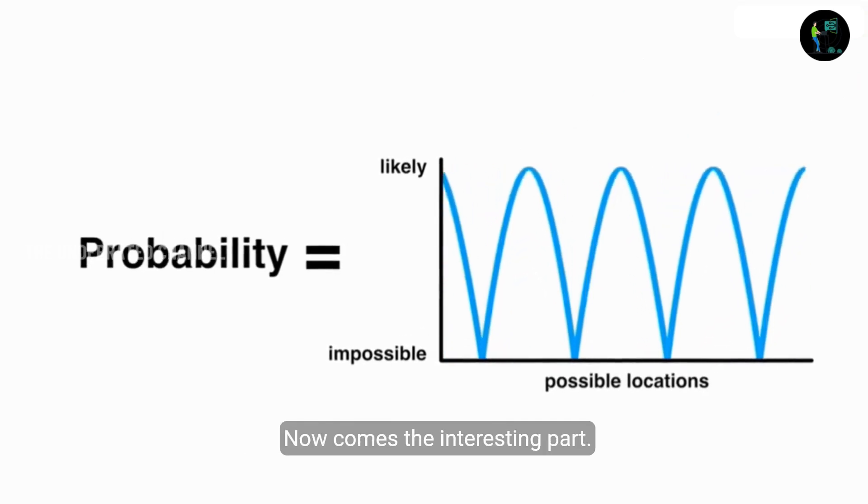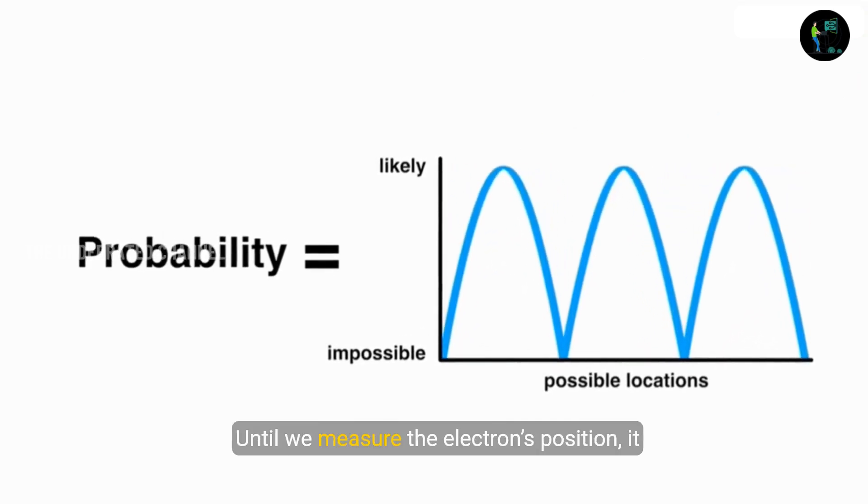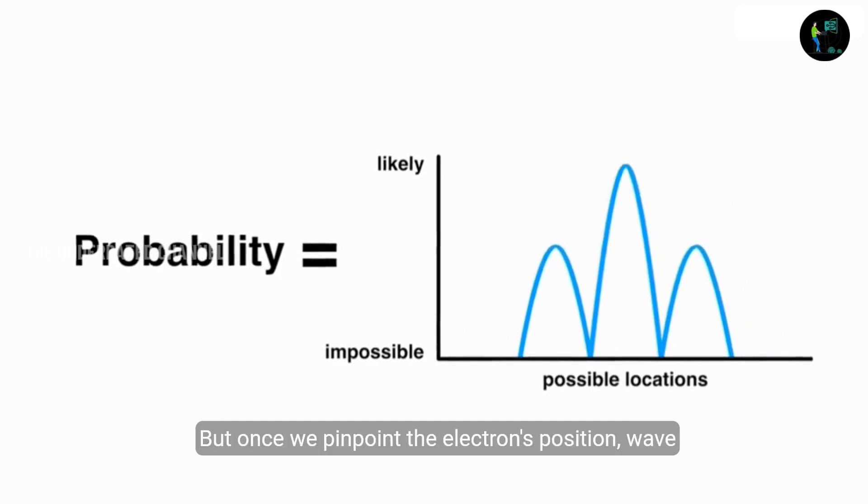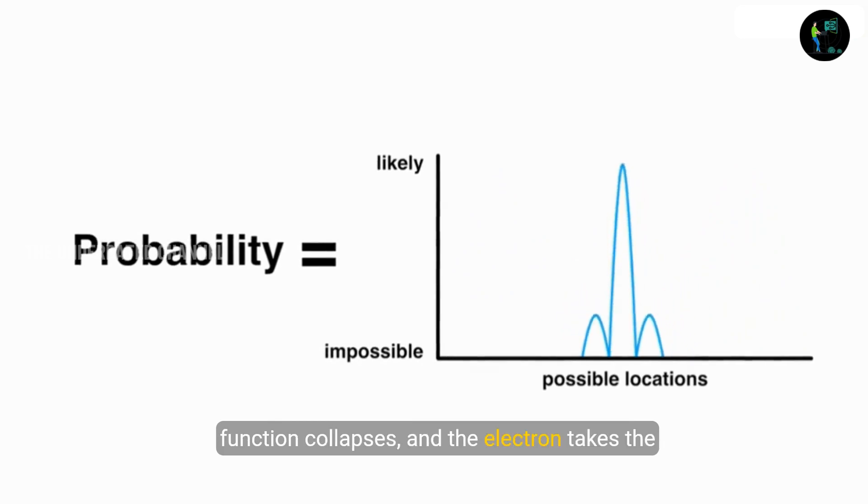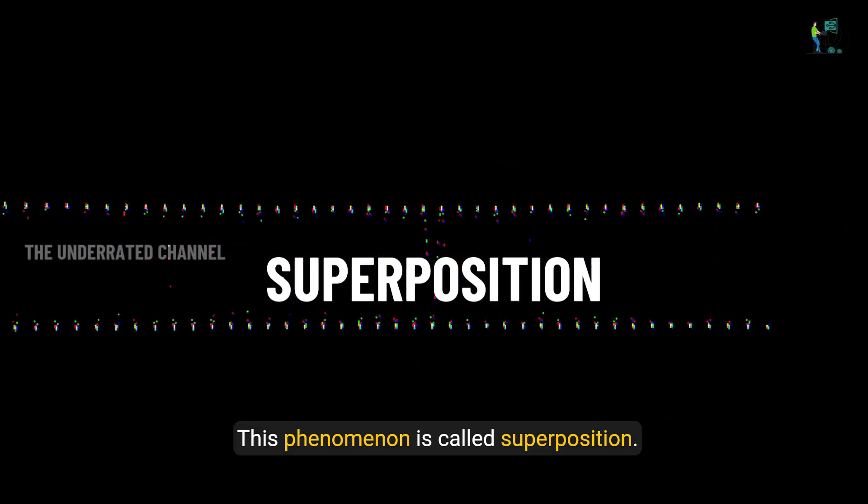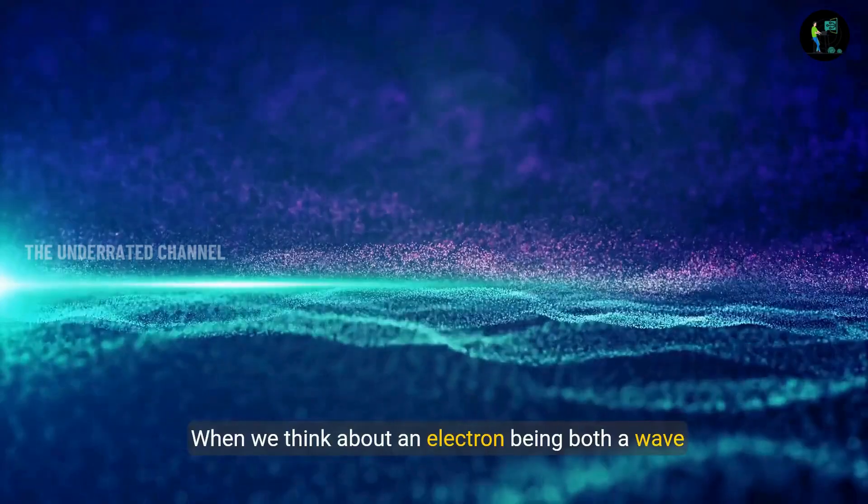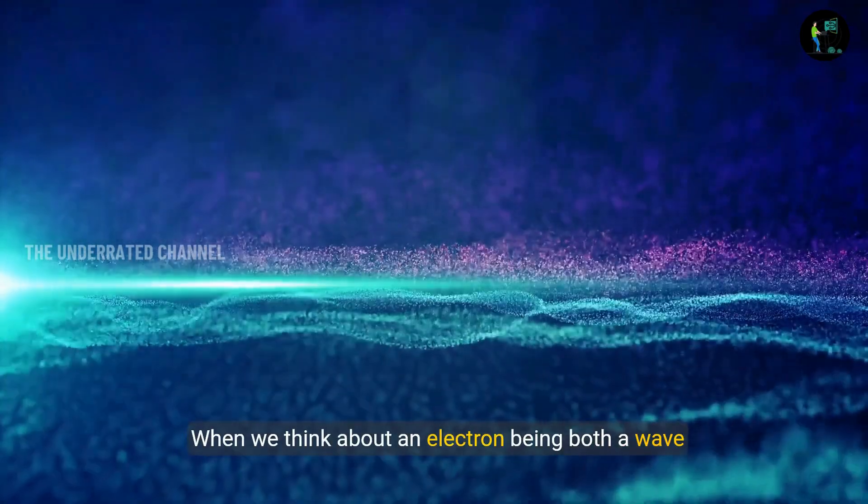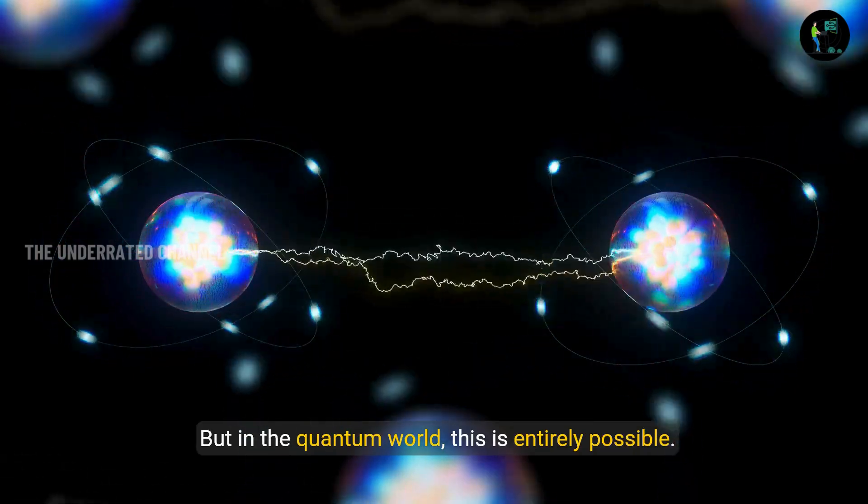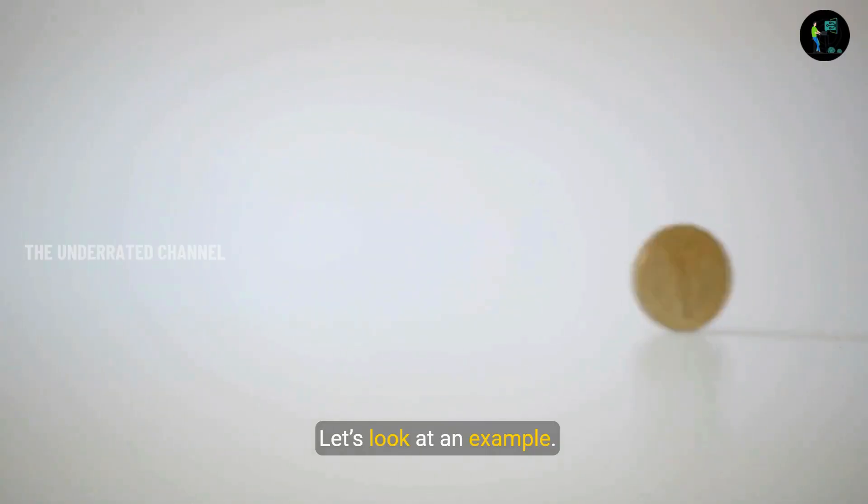Now comes the interesting part. Until we measure the electron's position, it remains in all possible locations in a waveform. But once we pinpoint the electron's position, wave function collapses and the electron takes the form of a particle at that exact point. This phenomena is known as superposition. When we think about an electron being both a wave and a particle at the same time, it can seem confusing. But in the quantum world, this is entirely possible.